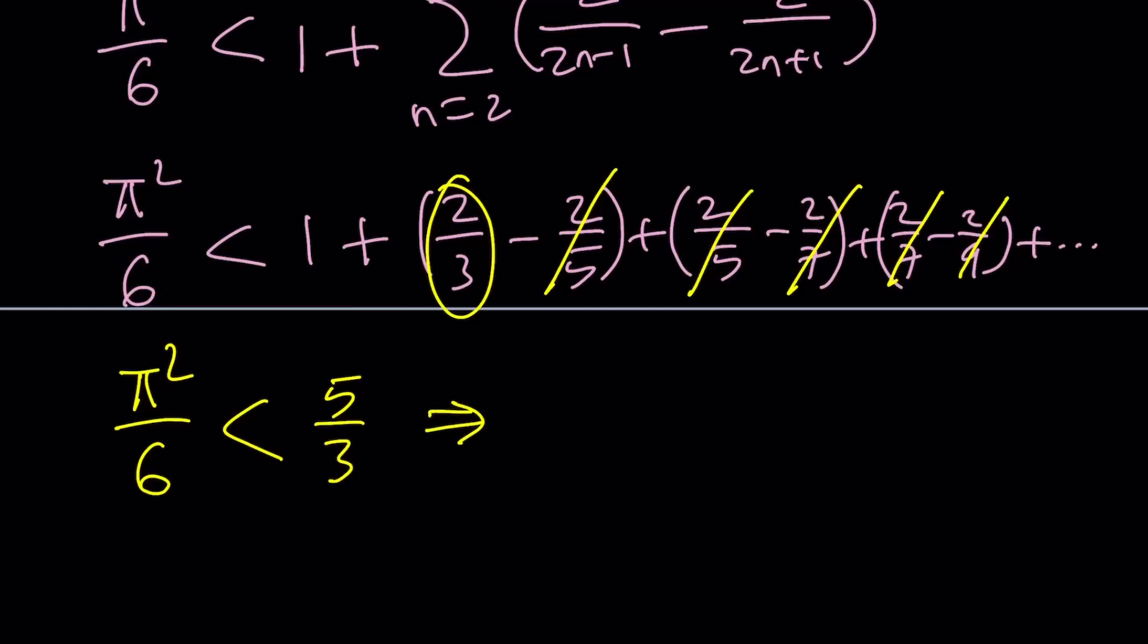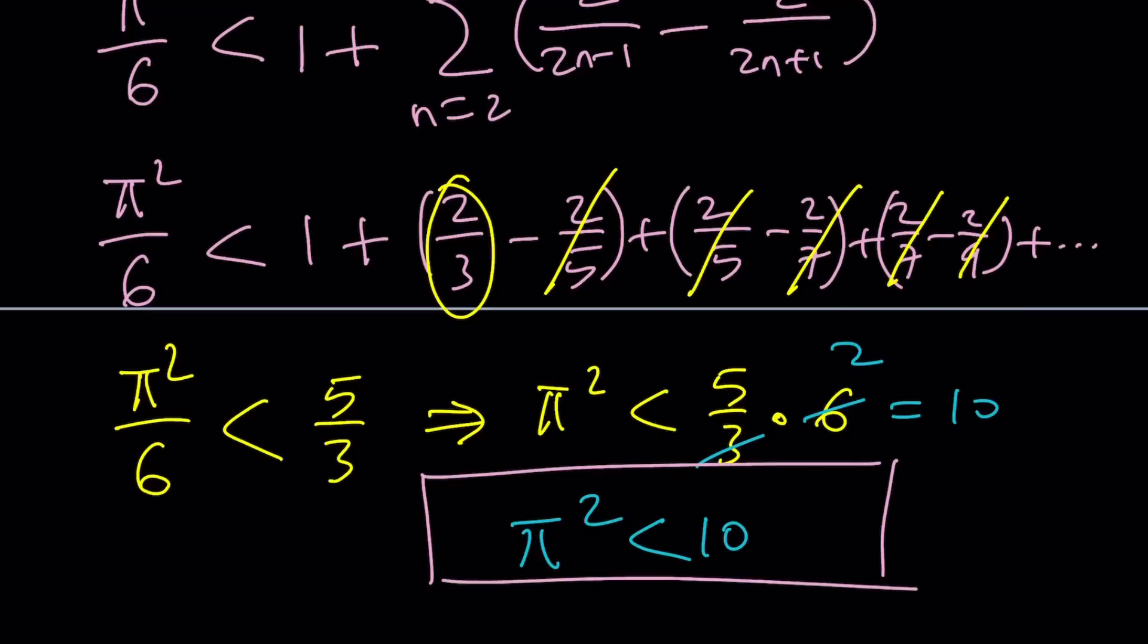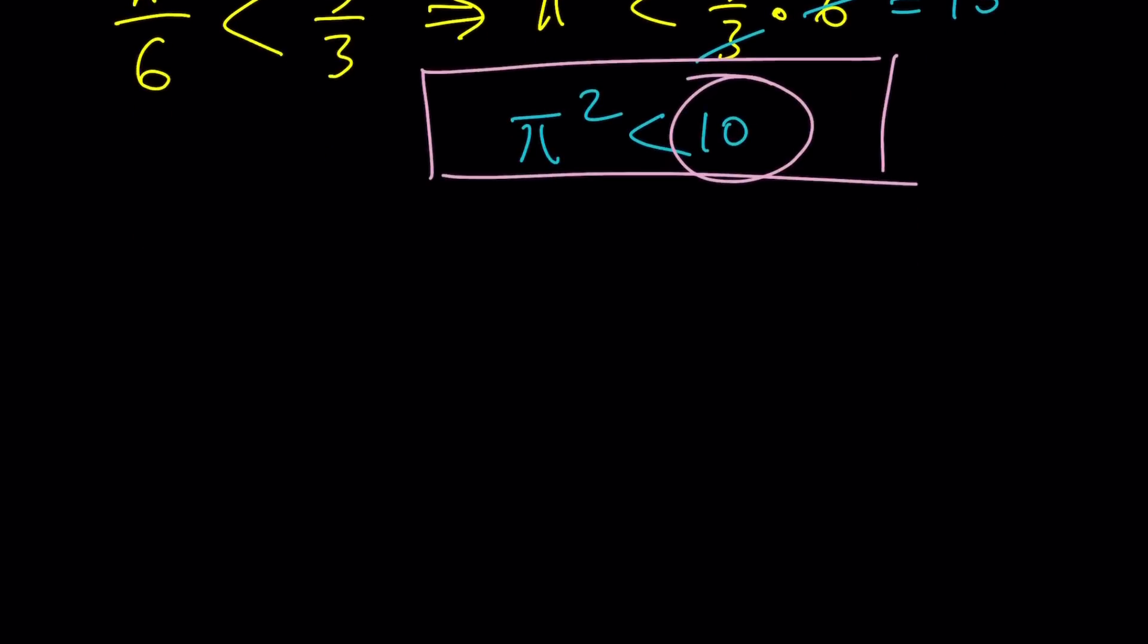And if you multiply both sides by 6, you're going to get pi squared is less than 5 over 3 times 6. 3 goes into 6 2 times. 5 times 2 equals 10. So this gives us pi squared is less than 10. And we are looking for the larger number. Therefore, the winner is 10. Yay! An integer wins over irrationals. All right? So far so good? All right. If you're ready, let's go ahead and talk about the second method.